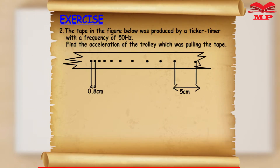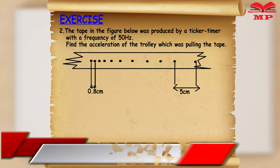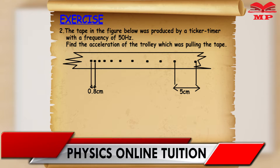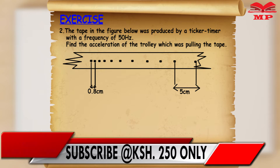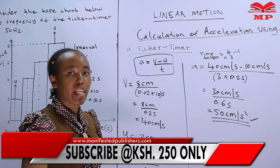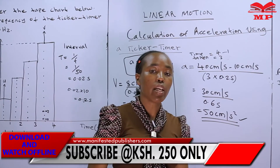Then number two. The tape in the figure below was produced by a ticker timer with a frequency of 50 hertz. Find the acceleration of the trolley which was pulling the tape. Ensure that you calculate the acceleration. The figures are shown.